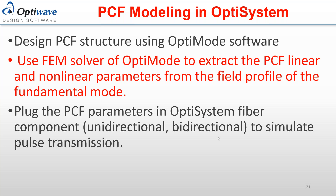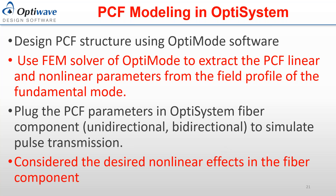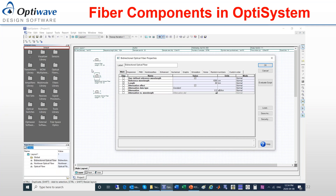You then take these parameters and plug them into the different available fiber components in OptiSystem. In OptiSystem, there are two or three types of fiber components. You can find them under optical fiber in the library directory. You have the optical fiber component, bi-directional component, and nonlinear fiber component. When you double-click on a component, you get a component property pop-up window where in each tab you have the parameters to enter, those extracted from the OptiMode design.